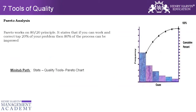The 80/20 principle means that if you can work on and correct the top 20 percent of your problems, then 80 percent of the process can be improved. If you work on the top 20 percent of the defects, you will be able to resolve 80 percent of your problems within your process or organization. Pareto analysis is used in organizations to resolve conflicts and is also used in different Six Sigma projects.